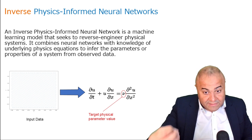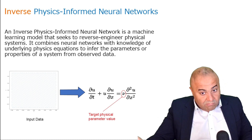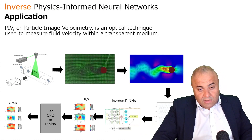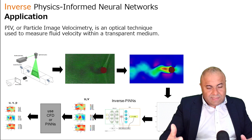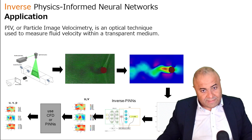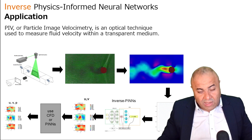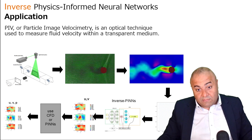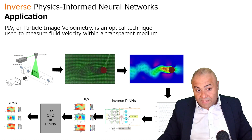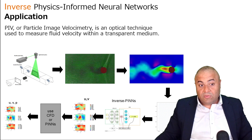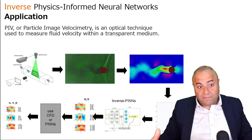So how can we predict this viscosity? We apply inverse physics-informed neural networks. One very strong application of inverse PINNs is predicting the pressure gradient from the result of PIV — particle image velocimetry.